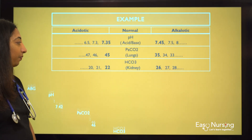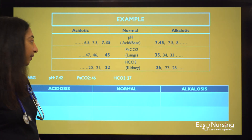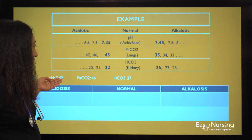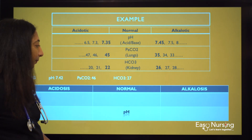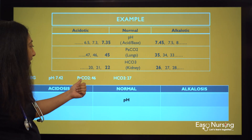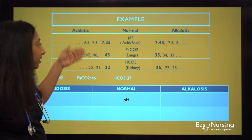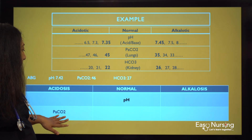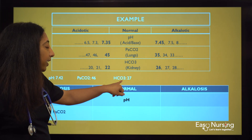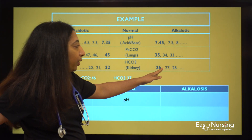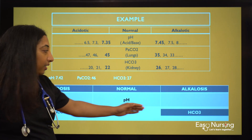Last example: pH is 7.42, which is normal. PaCO2 is 46, which is above 45, so it is acidotic. Bicarb is 27, which is above 26, so it is alkalotic.